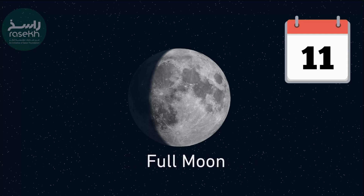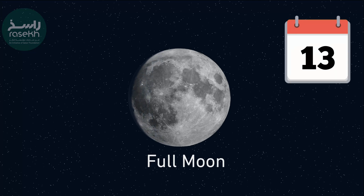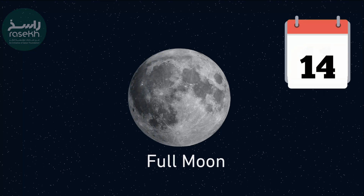Full Moon: When the moon has orbited 180 degrees around the Earth from the new moon position, the lunar disk appears completely illuminated by sunlight. The Earth is now positioned directly between the moon and sun.